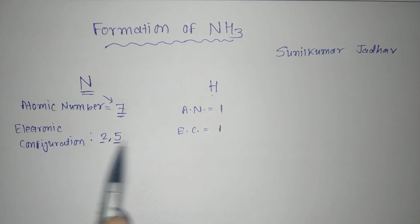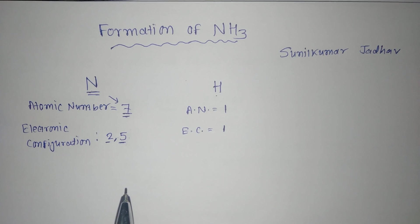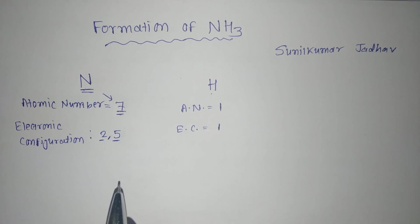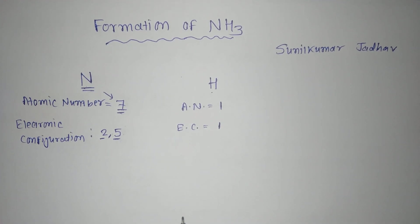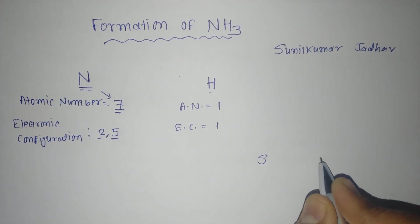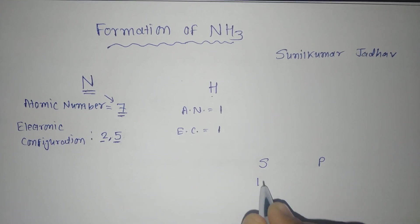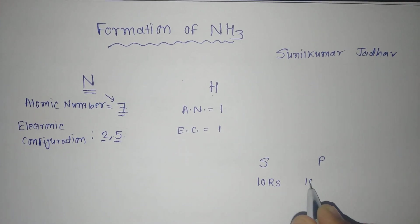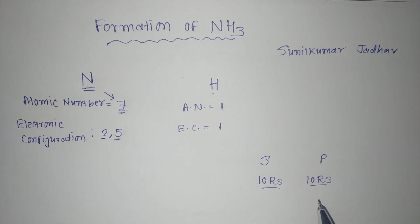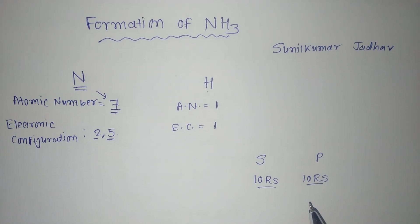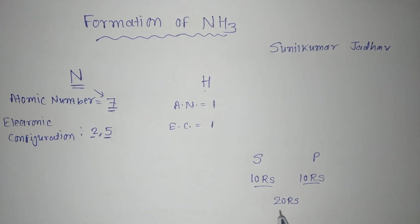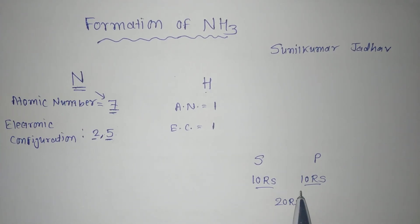But here when ammonia forms, it is not forming the ionic bond but it will form the covalent bond. What is covalent bond? Let me explain with one example. Suppose one student, let me say S, and another student is let me say P. This student is having 10 rupees and this student is also having 10 rupees. Now they both have gone for buying wafers of rupees 10.